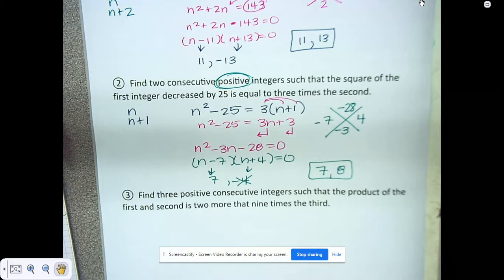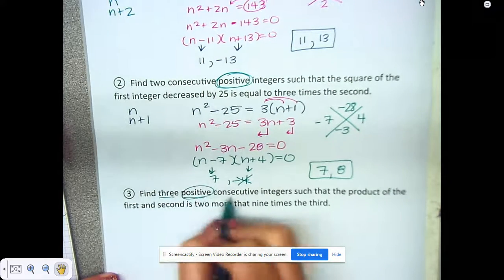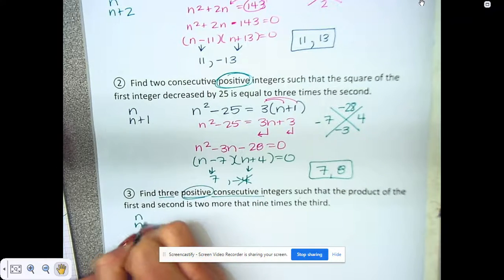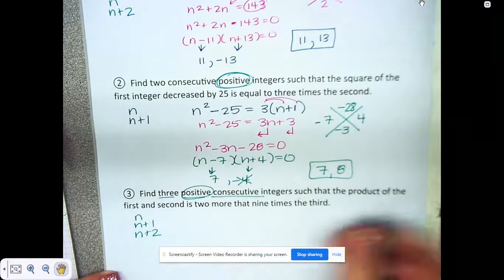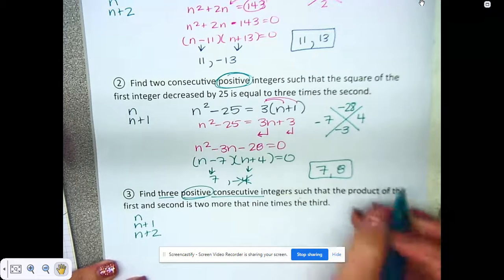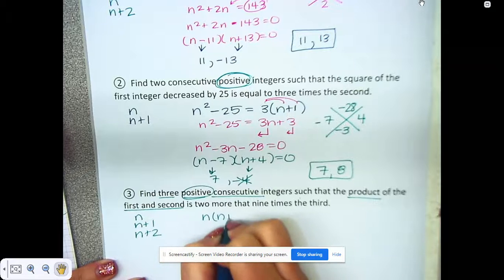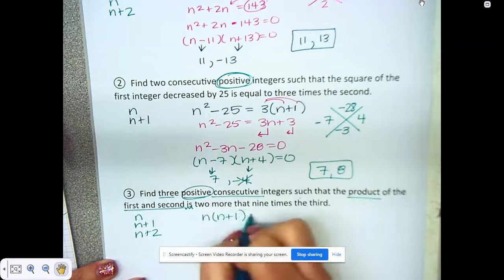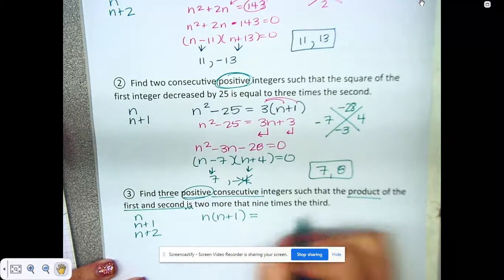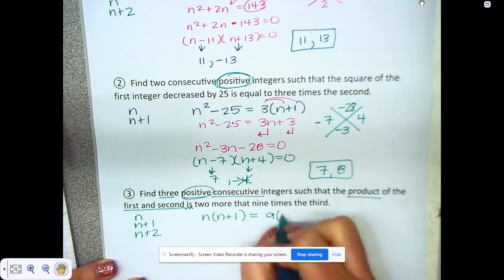Number 3: three positive consecutive integers. If it's 3 and they're positive, just consecutive, it's going to be n, n plus 1, and n plus 2, such that the product of the first and second—that means n times n plus 1—equals two more than nine times the third.